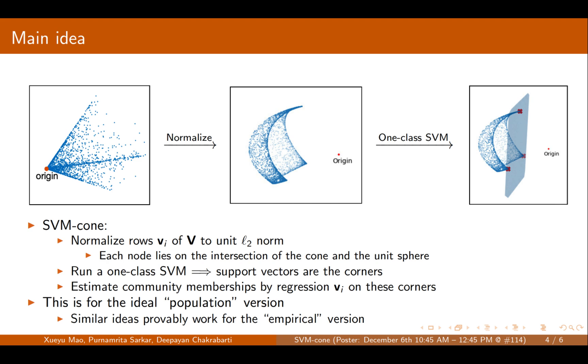The support vectors are the corners. Then we can estimate community memberships by regression on these corners.